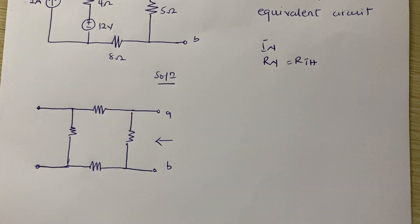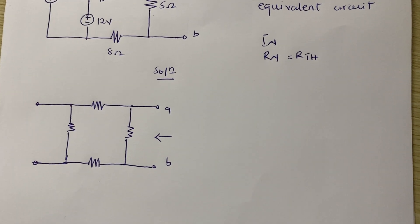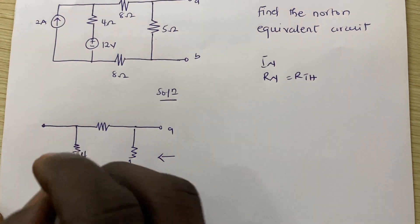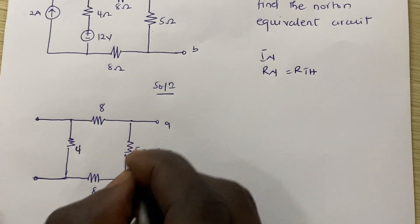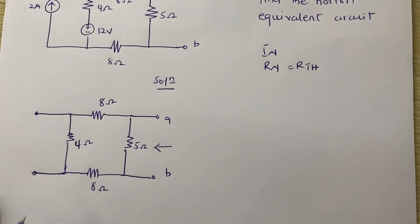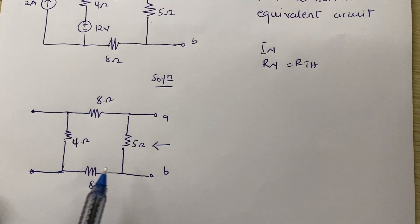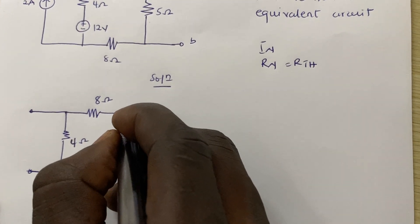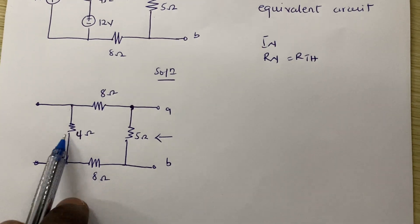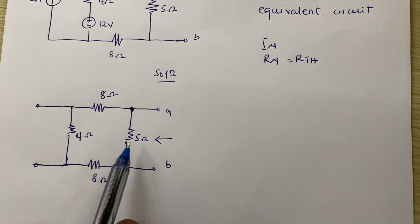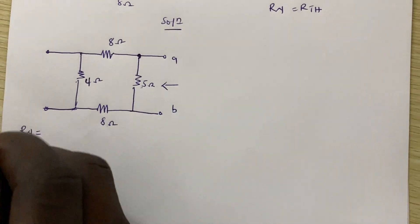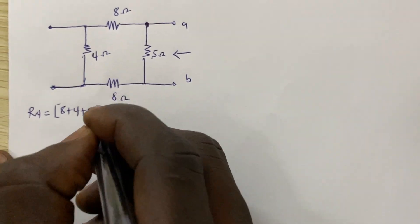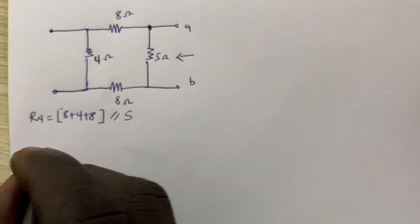Now we have to find our equivalent resistance. We have four ohms here, eight ohms here, eight ohms here, and five ohms here. We can ignore the terminals, so we have a circuit where — since we are looking from this angle — this node means that the 8, the 4, and the 8 are in series, but the sum of those is in parallel with the 5. So Rn is simply 8 plus 4 plus 8, in parallel with the 5, which gives us 20.